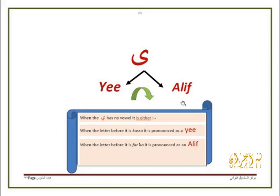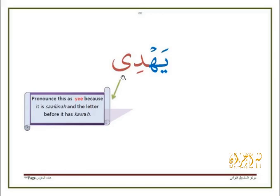The يَ in this word has no diacritical marks, so we look at the letter before this يَ. It has a كَسْرَة. Therefore, this letter is pronounced as a يِ and this syllable is pronounced دِي: دِي.